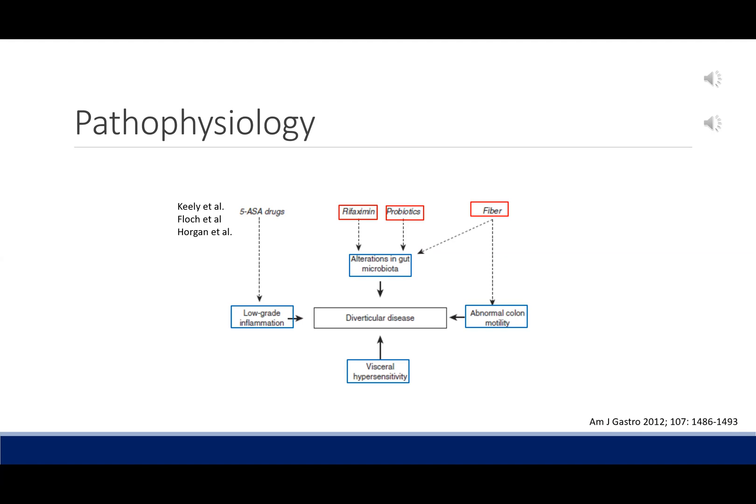Diverticulitis cases are 4.6 times more likely to receive an IBS diagnosis over a 9-year follow-up period. Appreciation of the possible role of inflammation and microbiota may extend our therapeutic options. Several studies looking at the role of 5-ASA mesalamine show some improvement in symptoms and prevention of recurrence. The PREVENT-2 trial did not meet its goal of reducing acute attacks in a 2-year period, though it did not look at chronic symptoms. Bioncki et al. did a meta-analysis of four trials and calculated a number needed to treat of 3 for rifaximin versus placebo for symptom relief, and 59 to avoid a diverticular attack.